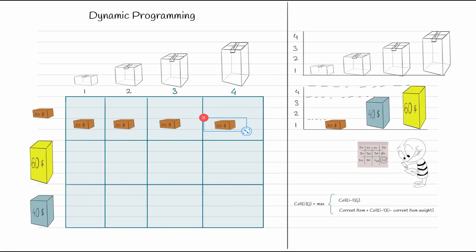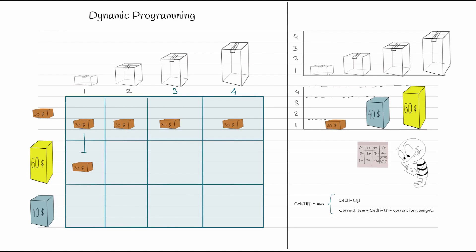Now the thief sees the second item — the sixty-dollar item of size four. He now has two items. For a box of size one, the sixty-dollar item of size four won't fit. He can only pick the item from the top row, so the benefit carries over from the previous row. The maximum benefit here comes from the top.